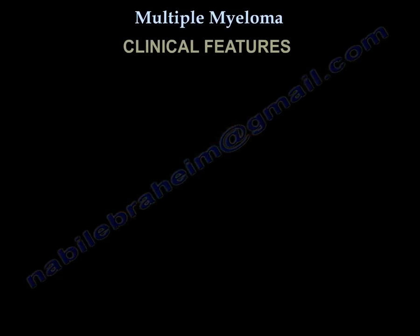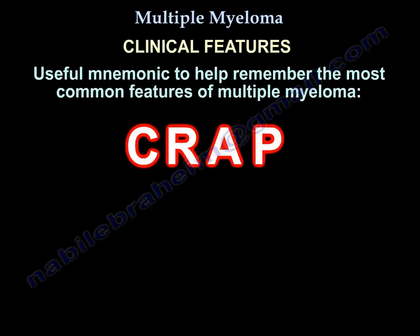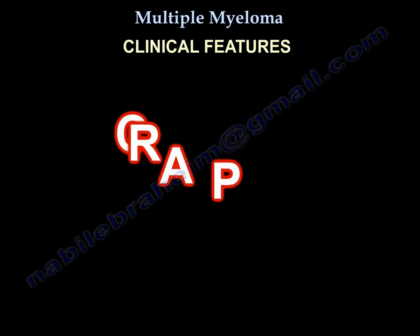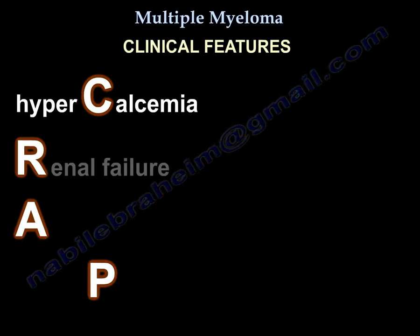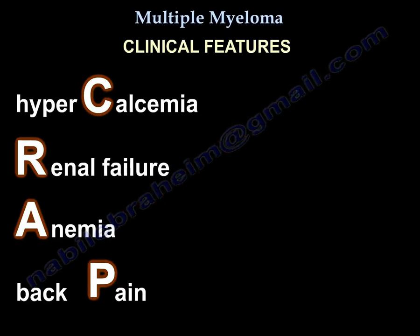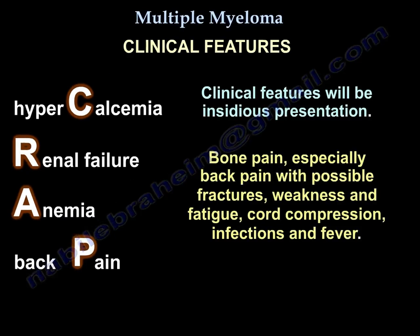For clinical features, the easiest mnemonic is CRAB — you feel like crap. C is hypercalcemia, R is renal failure, A is anemia, and B is back pain.